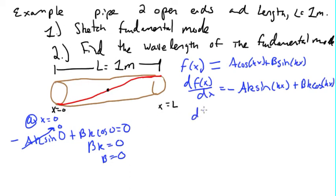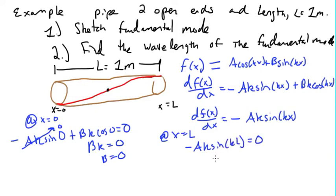So now our df dx is equal to minus Ak sine kx, because this coefficient is equal to zero. Now at x equal to L, it's also equal to zero. So we have minus Ak sine kL equal to zero, or sine kL equal to zero, or kL equal to n pi. K equal to n pi over L.